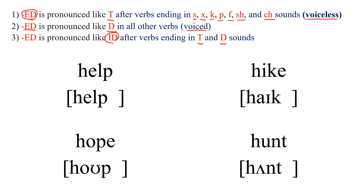First one: HELP. Since this ends in a consonant, we put ED to make it past. The ending is P, which is one of the voiceless sounds, so we use T here and we say HELPED.